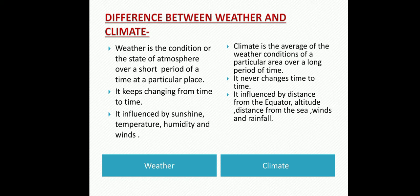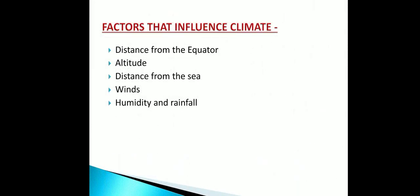Climate is the average of the weather conditions of a particular area over a long period of time. It never changes from time to time. Climate is influenced by distance from the equator, altitude, distance from the sea, winds, and rainfall. These are the main factors that influence climate.